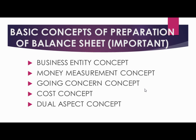If there is no going concern assumption and the company is expected to close, the classification of current and non-current assets and liabilities would differ. For example, if I know I am going to close my company, all fixed assets would form part of current assets because I would sell them off. This is why the going concern concept matters.